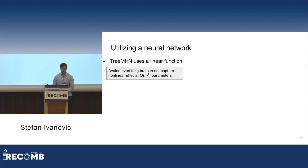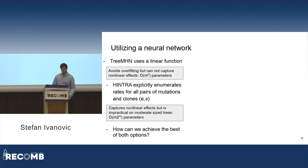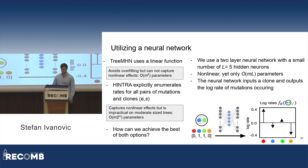Specifically, TreeMHN uses a linear function. A nice advantage of this is that it avoids overfitting, but it does not capture nonlinear effects, and the number of parameters is quadratic in the number of mutations. Hintra explicitly enumerates rates for all pairs of mutations and clones. A really nice advantage is it can capture very complicated nonlinear effects, but because of the exponential number of parameters, it's impractical on moderately sized trees. The question is: how can we achieve the best of both options? We use a two-layer neural network with a small number of hidden neurons. This is nonlinear, so it can capture the effects of combinations of mutations behaving nonlinearly, yet it only has a linear number of parameters in the number of mutations, so it's very resistant to overfitting.